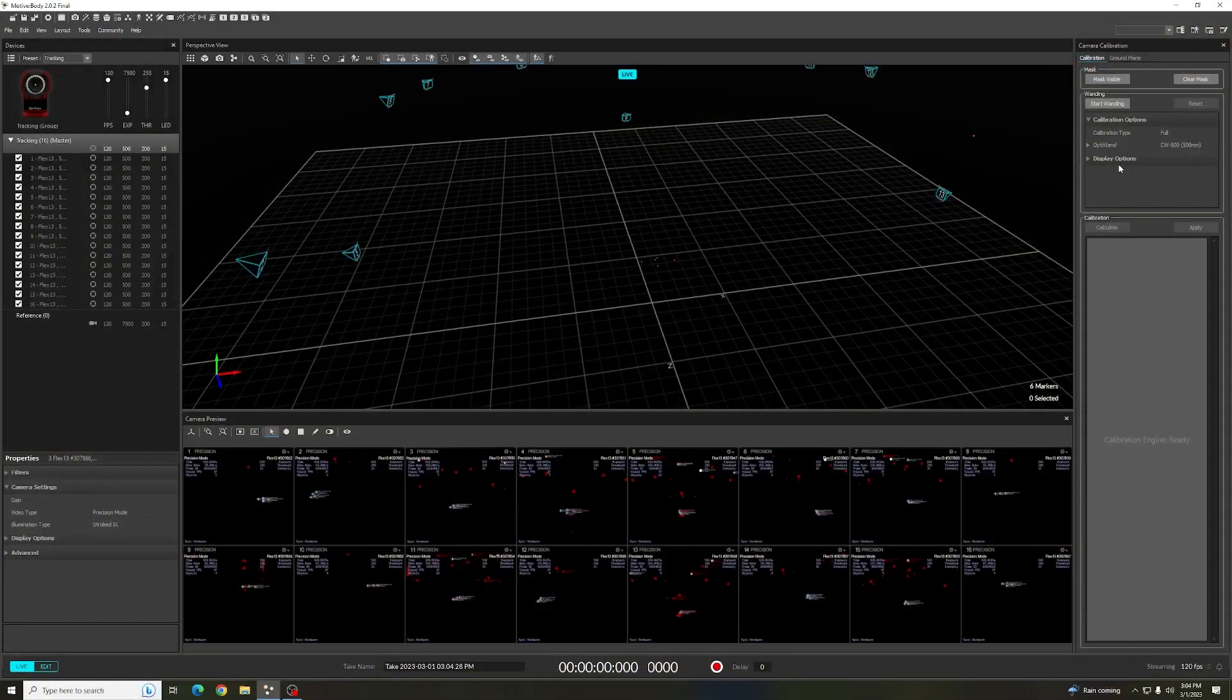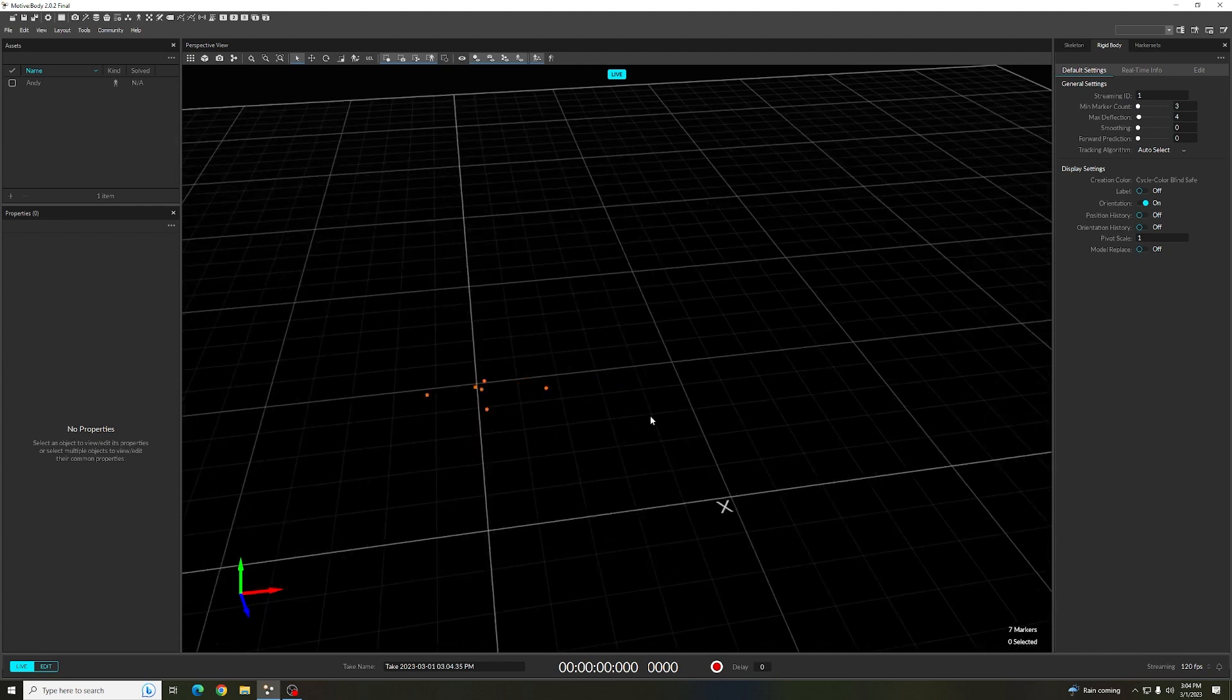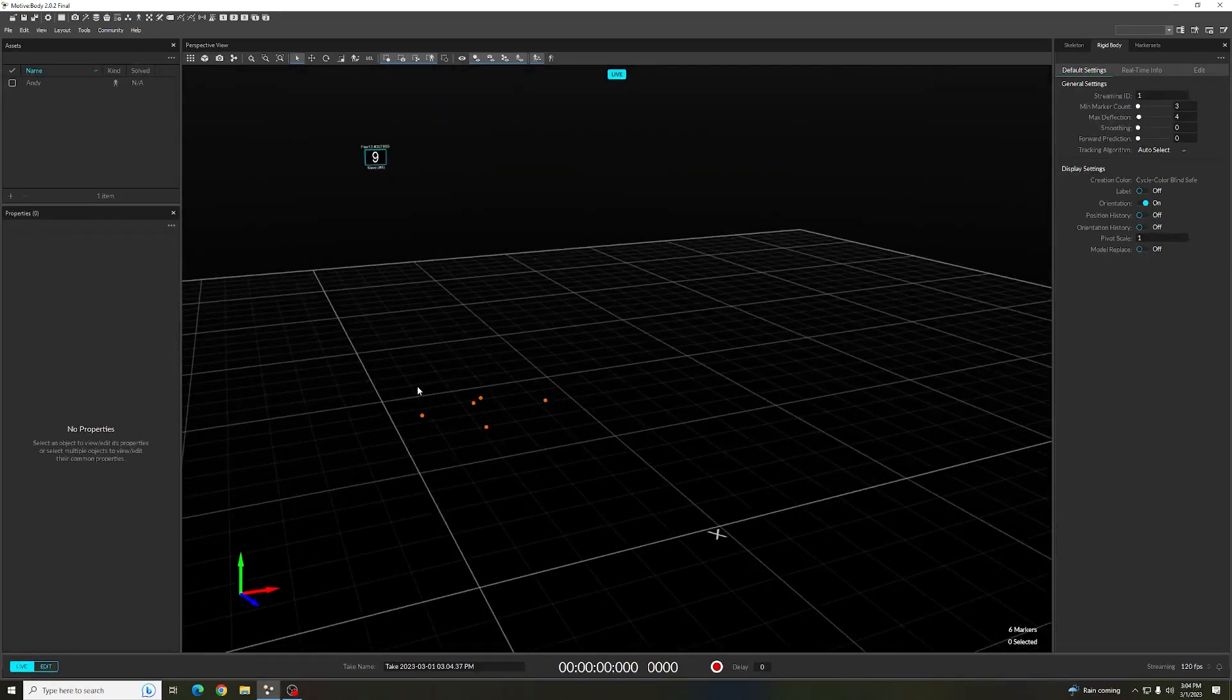Once your object is prepared, go into the creation layout and select the rigid body tab. Then, with the object in the capture space, select all of the markers that make up its rigid body.